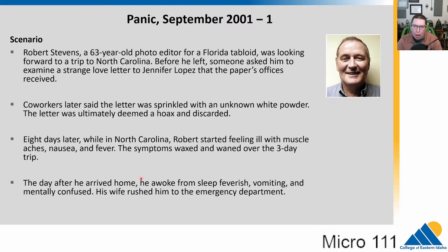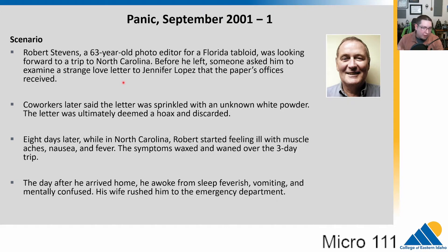Let's start with a case study. You may remember this if you're old enough, but there were some other things happening in September 2001 that may have preceded this. We have Robert Stevens — he's 63 years old, a photo editor at a Florida tabloid newspaper. He's about to go on vacation, but before he goes, someone asked him to examine a strange love letter to Jennifer Lopez that they received. He's looking at it, wondering if it's real. It turns out his co-worker later said that when they opened the letter, it had this white powder inside that came out. They didn't think anything of it, decided the letter was a hoax, and got rid of it.